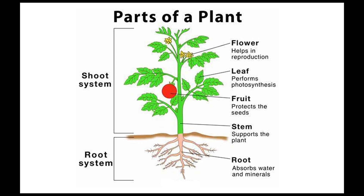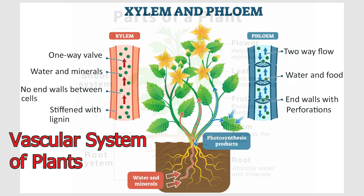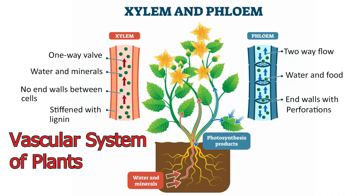Parts of the plant: the shoot system consists of flower, leaf, fruit, and stem. The root system is responsible for absorption of water and minerals. The vascular system of plants consists of phloem and xylem.